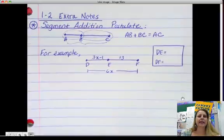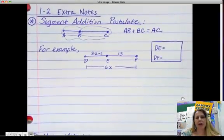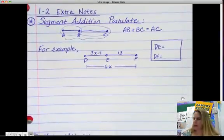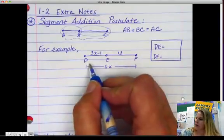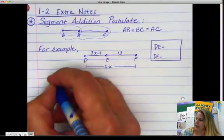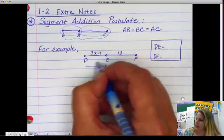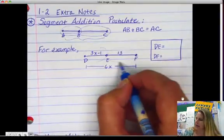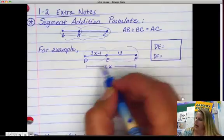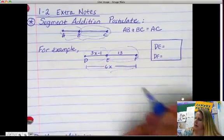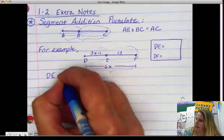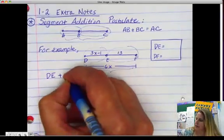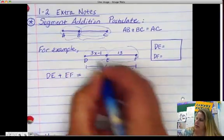So my example here that I have, go ahead and pause it and write this example down on your notes. In this problem here, I have DE is one part, I have EF is another part, and then I have the whole entire thing. So what I'm going to write is DE plus EF equals DF.